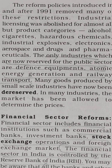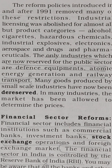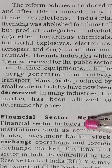The reform policies introduced in and after 1991 removed many of these restrictions. Industrial licensing was abolished for almost all product categories. The only industries now reserved for the public sector are defense equipment, atomic energy generation, and railway transport. Many goods produced by small-scale industries have now been de-reserved, and in many industries, the market has been allowed to determine prices.